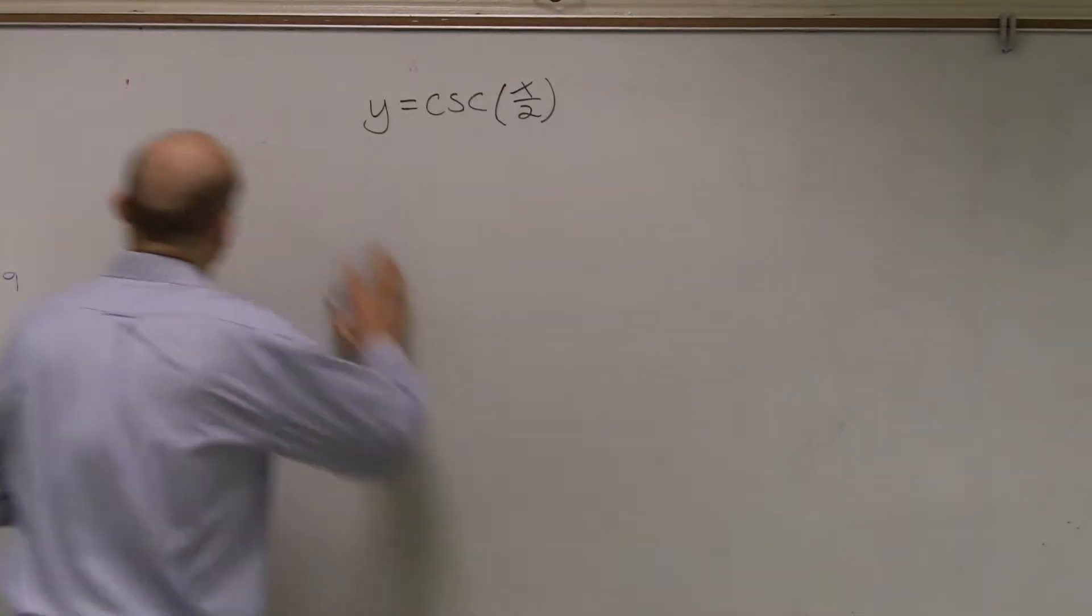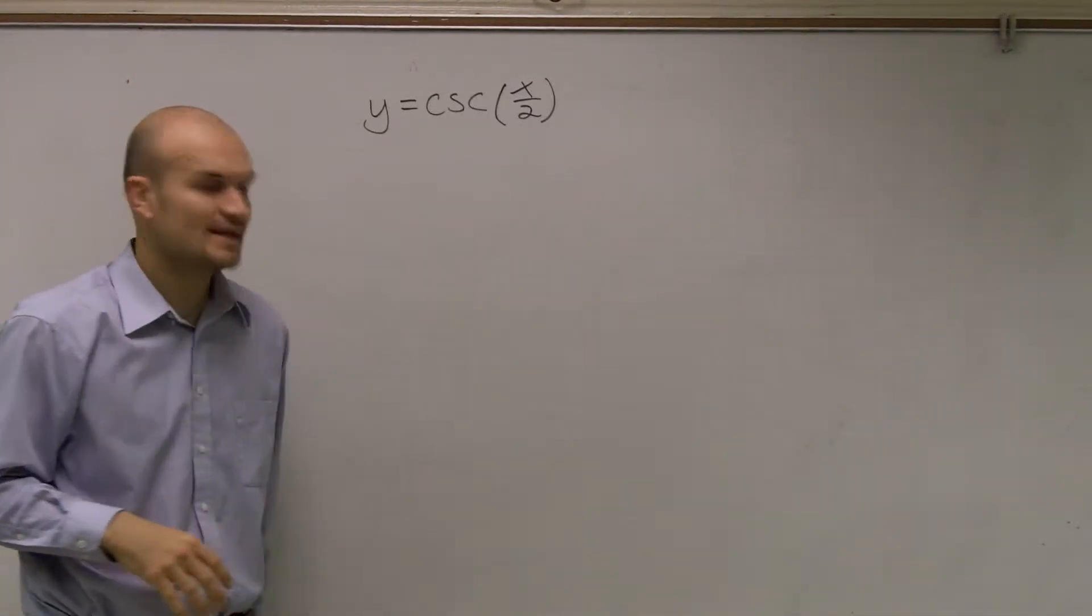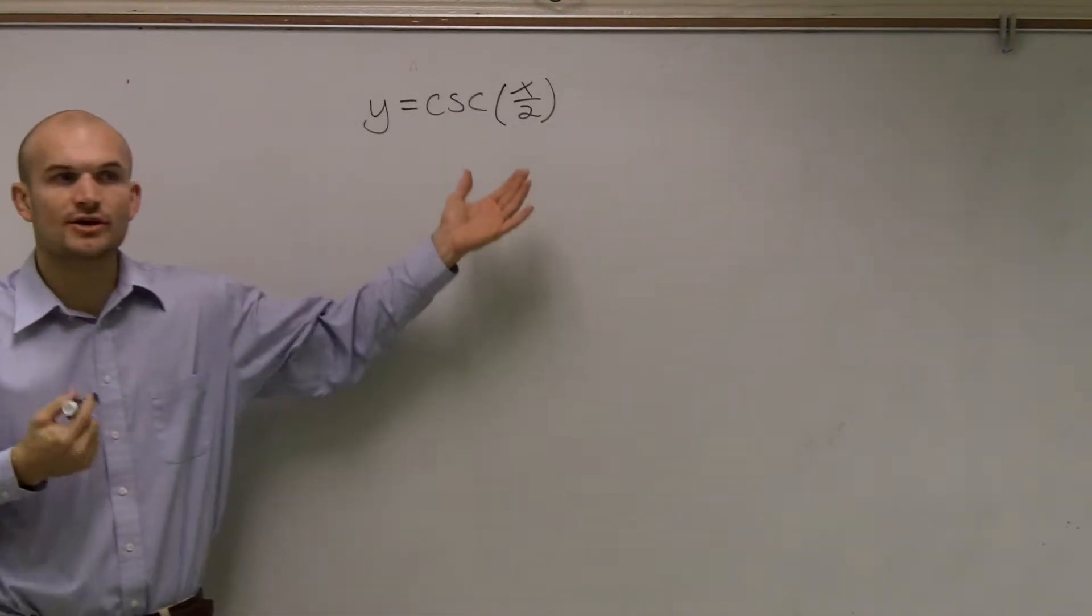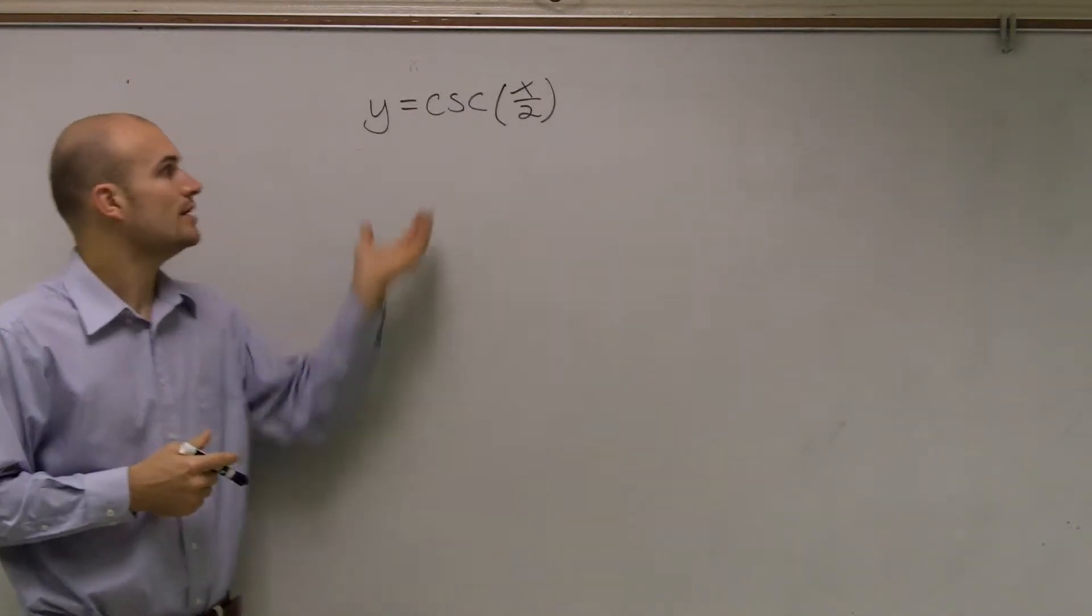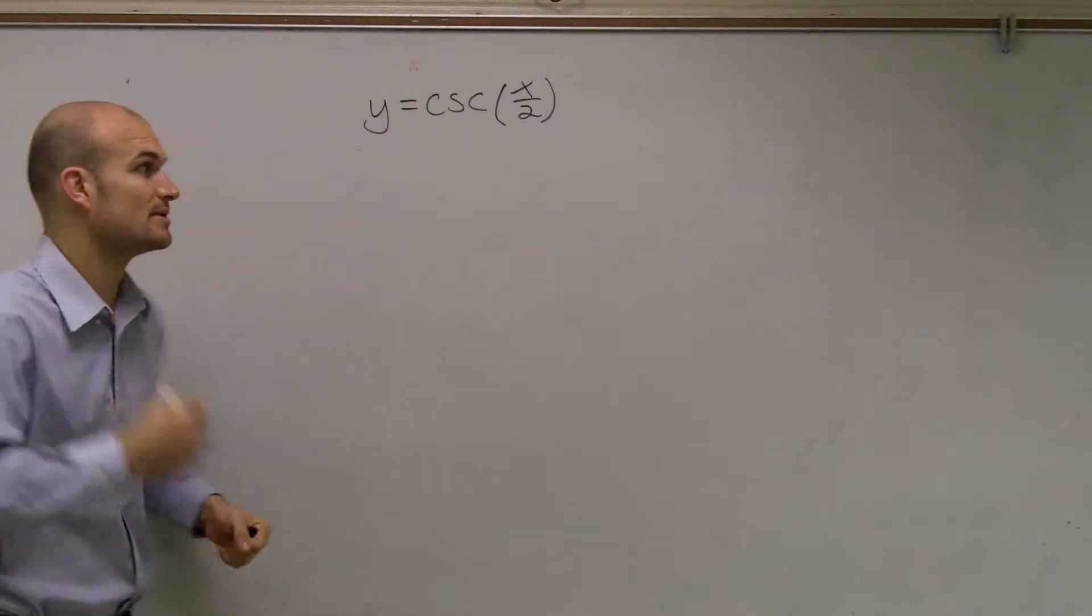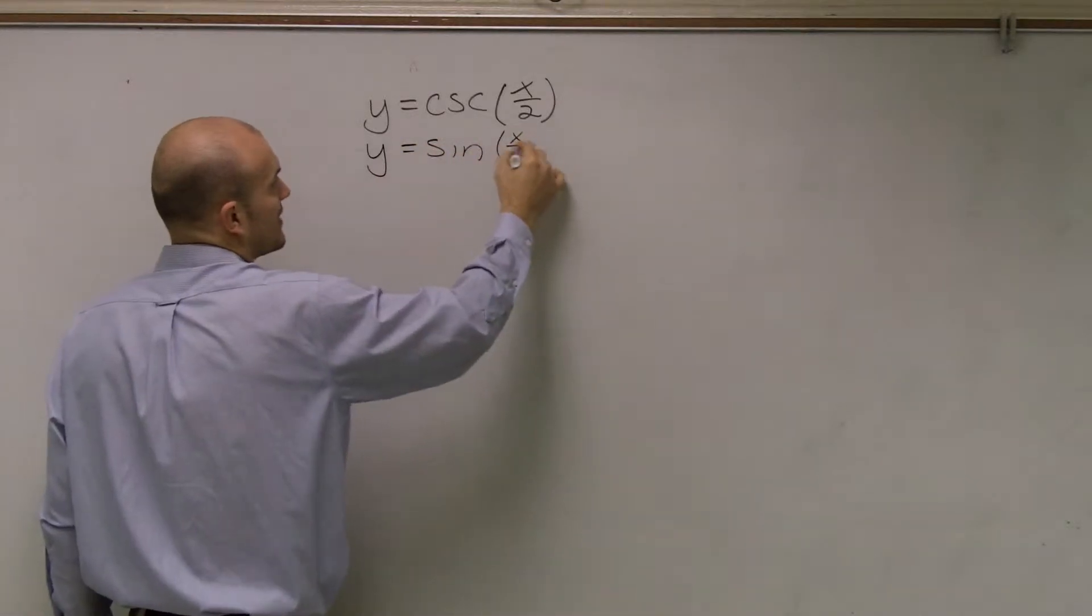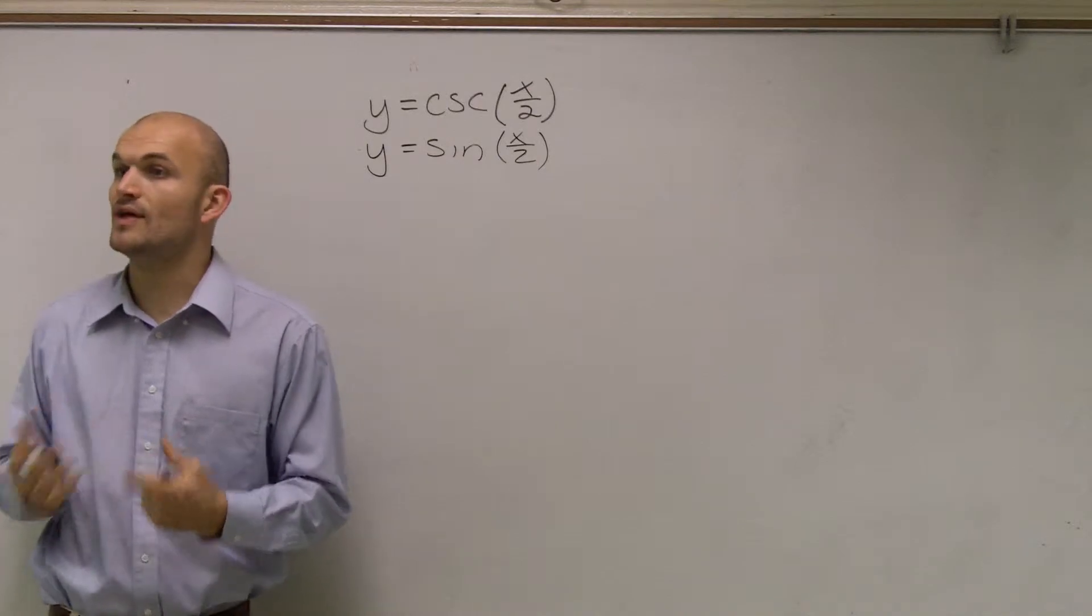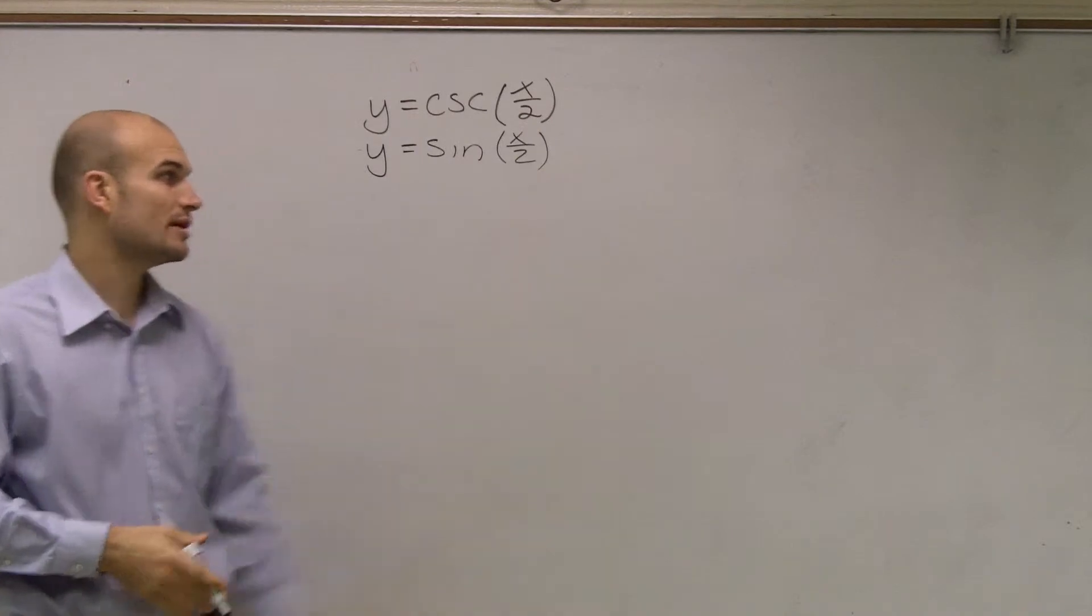When doing cosecant graphs, it's easiest to make sure that we just graph its reciprocal, and then what we'll do is that's going to help us find the cosecant. If you can remember, cosecant is going to be the reciprocal of sine. So pretty much what I can do is just write y equals sine of x divided by 2. And what I'm going to do is I'm just going to graph the sine graph, and then what I'll do is I'll use that graph to help me determine what the cosecant graph is going to look like.